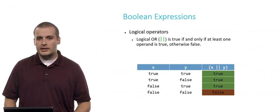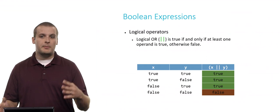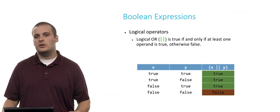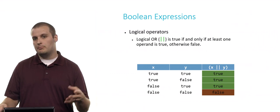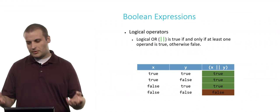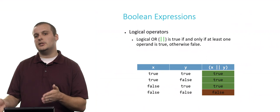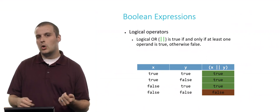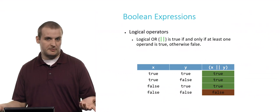Logical or is true if and only if at least one operand is true, otherwise false. So logical and required both x and y to be true. Logical or requires x to be true or y to be true. Or both x and y to be true. So again, we kind of find ourselves in a situation where we're going through our code and we've reached a fork in the road. And we want to go down a particular path if x is true or if y is true. But not necessarily if both are true, but possibly if both are true.